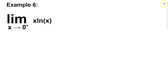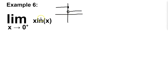Let me draw a basic graph to illustrate. When it says 0 plus, we're approaching x to the value of 0 but only from the right side. If it said 0 minus, we'd be looking from the left side. If there is no mark and it's just a number, then you have to look at both the left and right sides, and if they don't match, the limit does not exist.